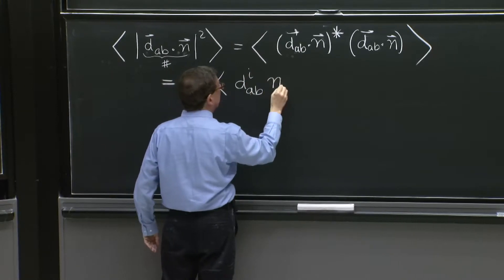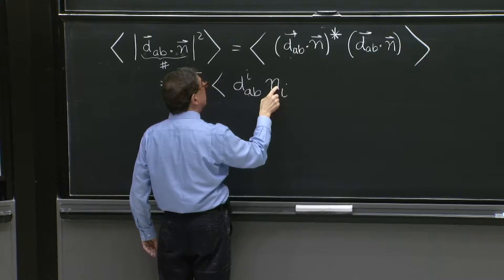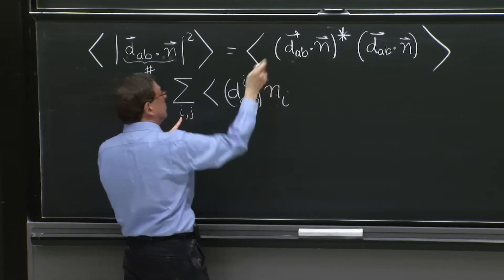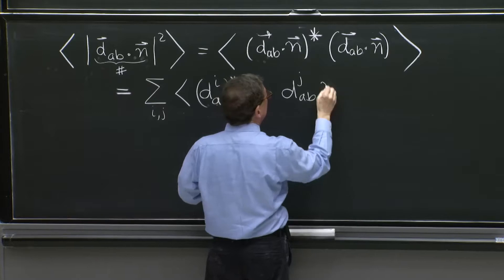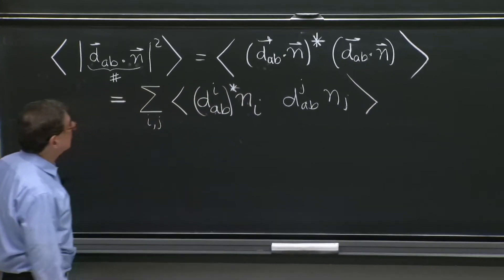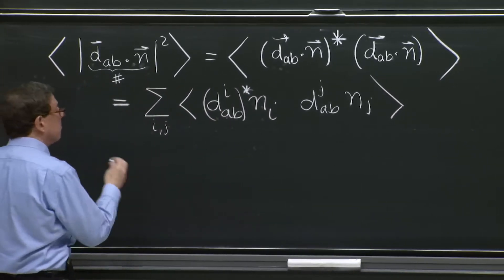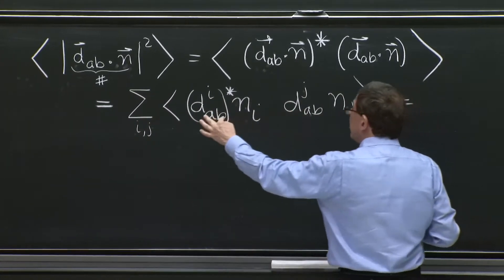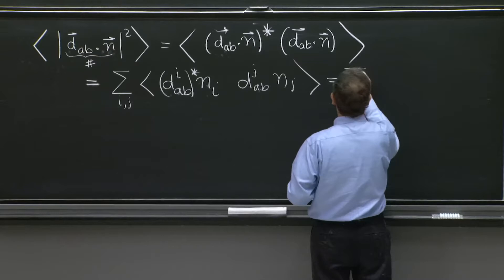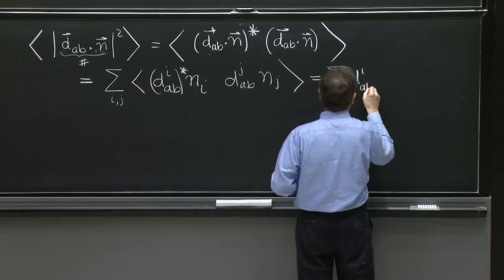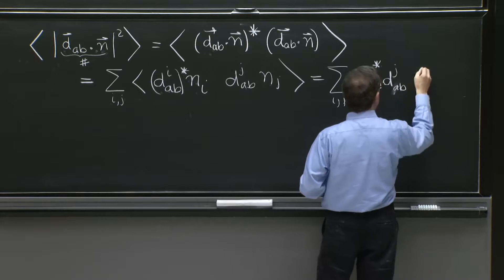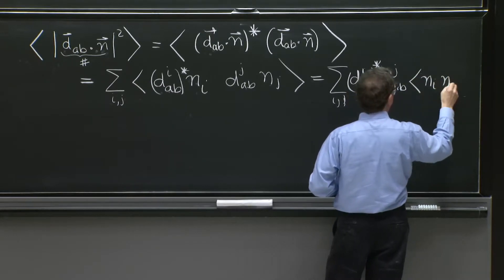the i-th component. Here, this should be star. And that's the sum over i is the first dot product. D_ab j and n_j. D_ab j, the sum over j is the second dot product. These are numbers, so they don't have anything to do with the average that we're doing over different directions. So we have sum over i and j of d_i ab star d_j ab times the average of n_i n_j.